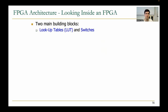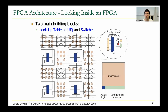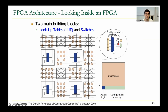There are two main building blocks: lookup tables and switches. If you look inside the lookup table, you will see that it consists of a configuration memory, a multiplexer, and flip-flops to implement sequential circuits. Looking at the proportion of these components inside an FPGA, you will see that it's mostly made up of interconnect, and lookup tables form a small part of the whole FPGA chip area.